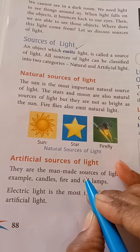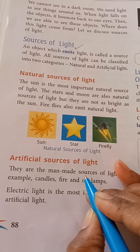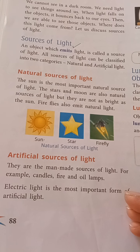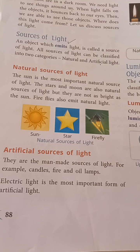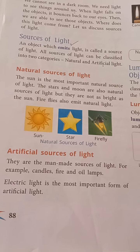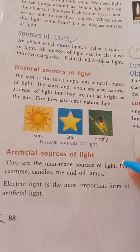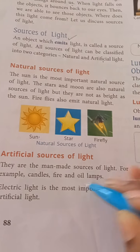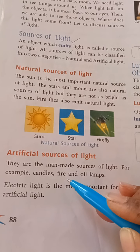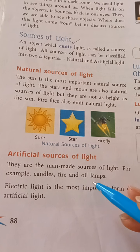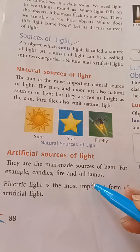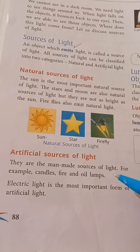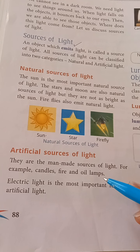Artificial sources means man-made sources. They are the man-made sources of light. For example: candle, fire, and oil lamp — these are different artificial sources of light.